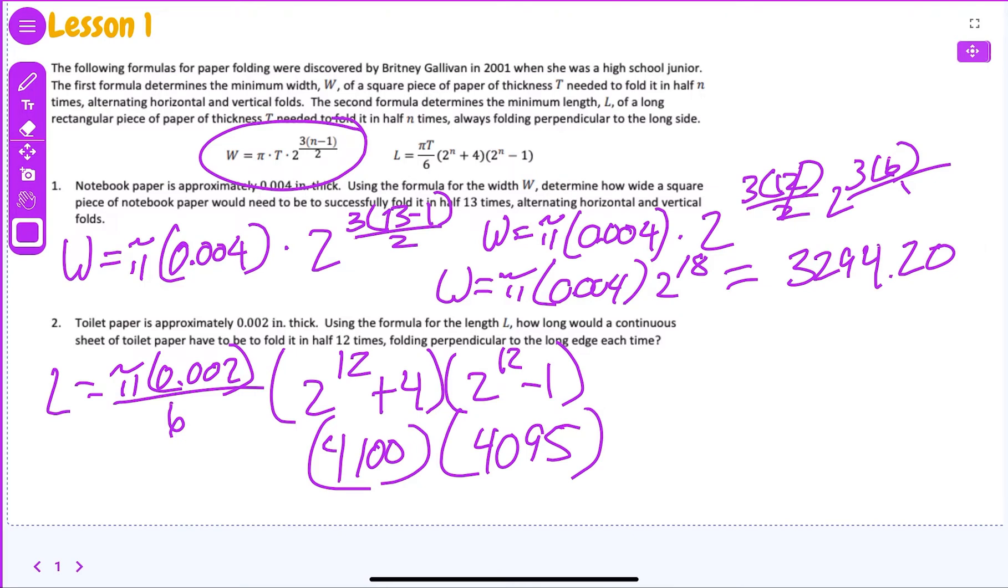We would have to plug in pi times 0.002 divided by 6. So L equals 0.001047 blah blah blah, so then we would just multiply that by 4100 times 4095, and you would get, the length would have to be 17,581.923. It's just plugging in stuff.